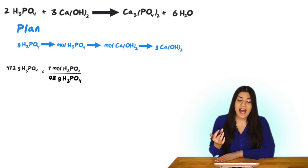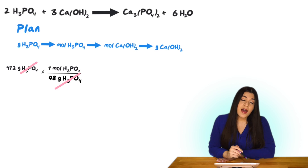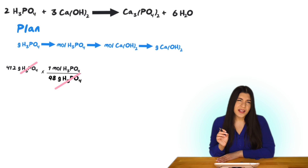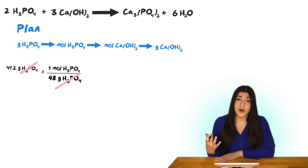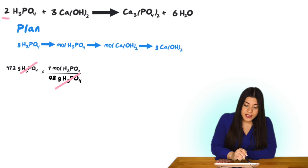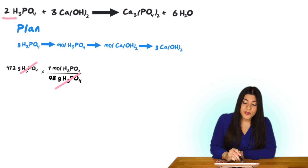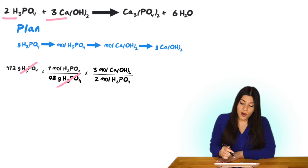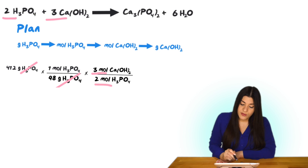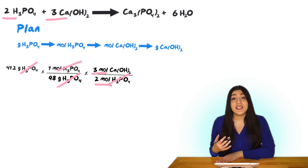The grams of phosphoric acid cancel, bringing us to moles of phosphoric acid. Now we do a mole-to-mole ratio to change the compound to calcium hydroxide. Going back to our balanced equation and looking at the coefficients: we have 2 moles of phosphoric acid for every 3 moles of calcium hydroxide. So 3 moles of calcium hydroxide goes on top and 2 moles of phosphoric acid goes on the bottom, canceling those units. Now we're at moles of calcium hydroxide.